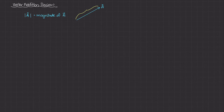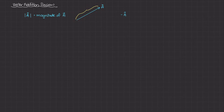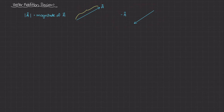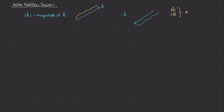We can represent negative vectors. If I take A and make it negative — so I have a vector that is negative A — negative A means we're taking this vector and switching its direction. So if A is going up and to the right, then negative A would be going down and to the left. In both cases, the length of the vector is still the same, so the magnitude of A equals the magnitude of negative A.